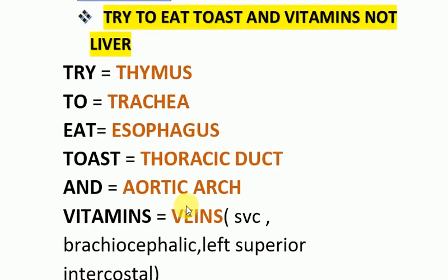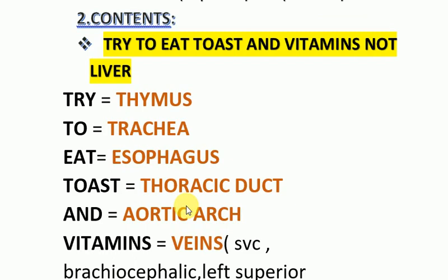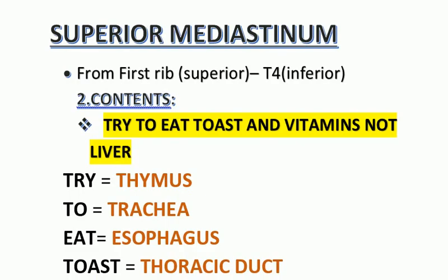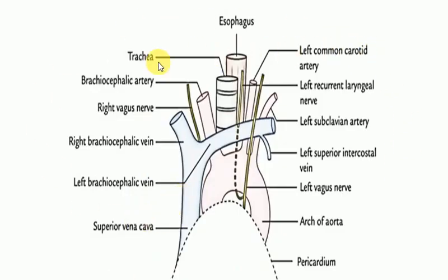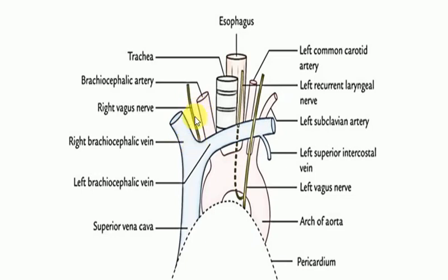These are the contents of the superior mediastinum. You can memorize the contents through this mnemonic. Now these are the structures shown in the diagram — contents of the superior mediastinum. This is the esophagus, this is the trachea, then we have the arch of aorta, the brachiocephalic artery, the left common carotid and left subclavian artery, the vagus nerve, the superior vena cava, the left brachiocephalic vein, and right brachiocephalic vein.